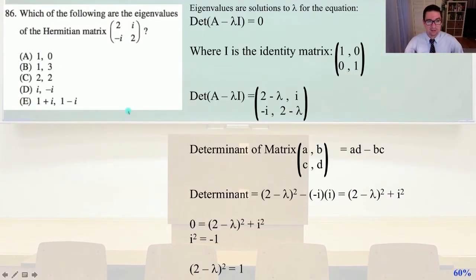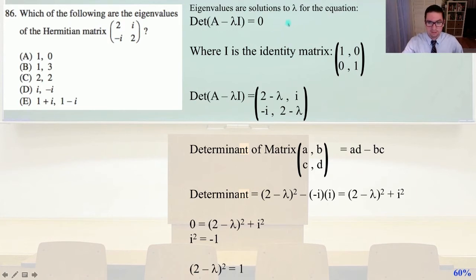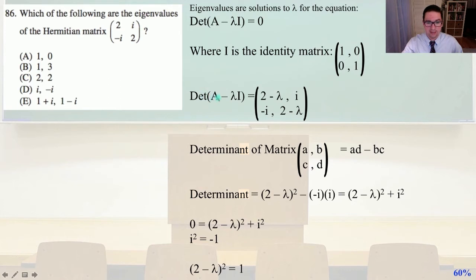Problem 86: which of the following are the eigenvalues of the Hermitian matrix shown, with entries 2, i, negative i, and 2? Eigenvalues are solutions to lambda for the equation determinant of (A minus lambda I) equals 0, where I is the identity matrix with 1s on the diagonals. So for the determinant of (A minus lambda I), we subtract lambda times the identity matrix from the diagonals, giving us (2 minus lambda), i, negative i, (2 minus lambda).